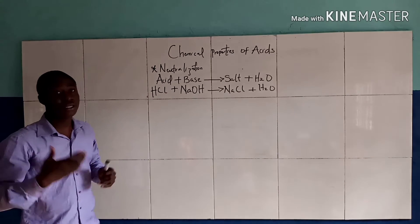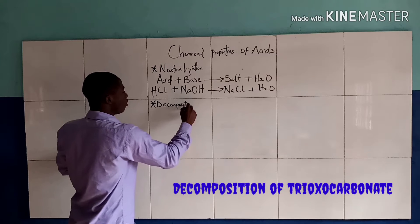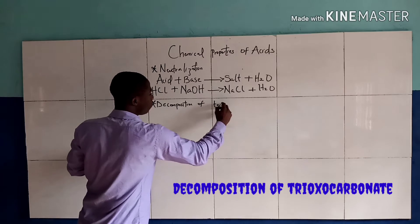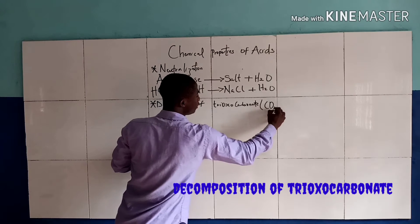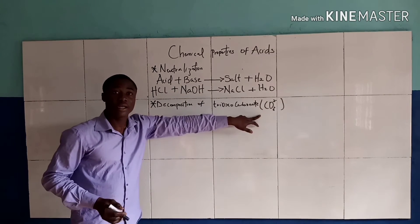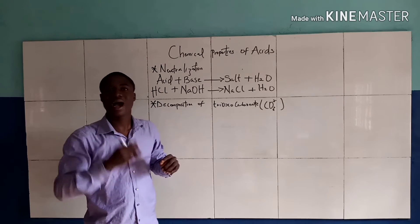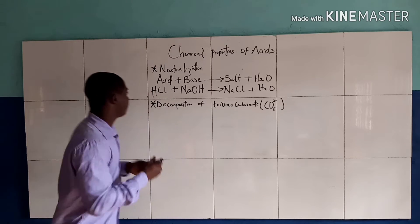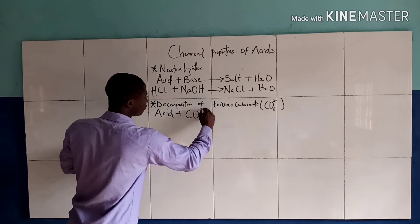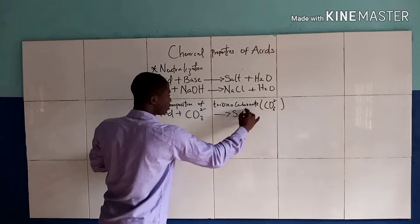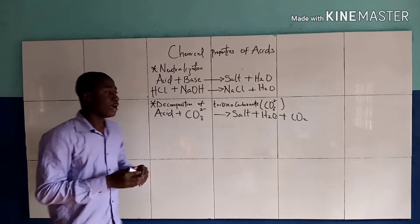Now we have another chemical property of an acid: decomposition of trioxocarbonate, which is CO₃²⁻. When an acid reacts with a trioxocarbonate, it liberates carbon dioxide and water and also produces a salt.